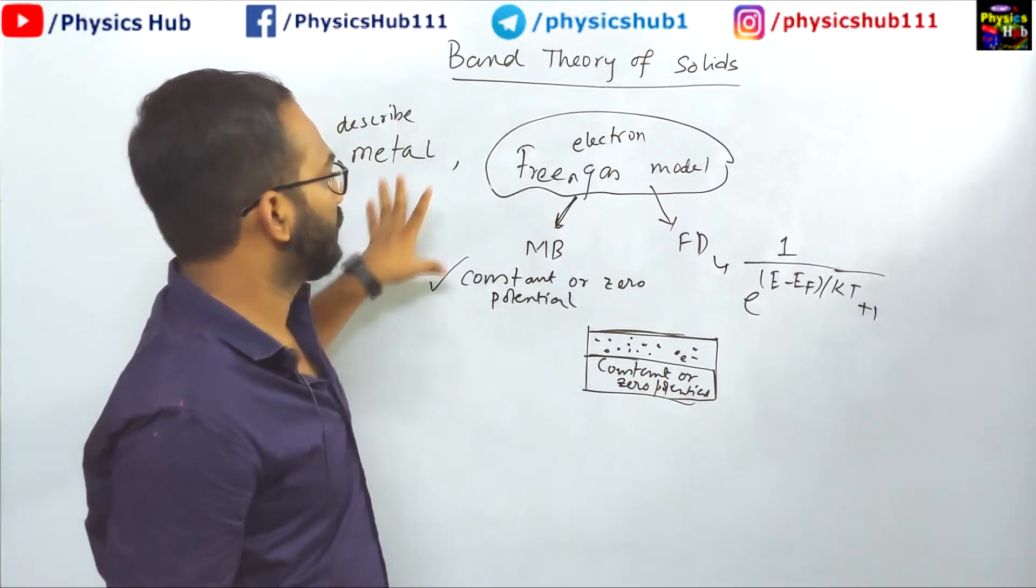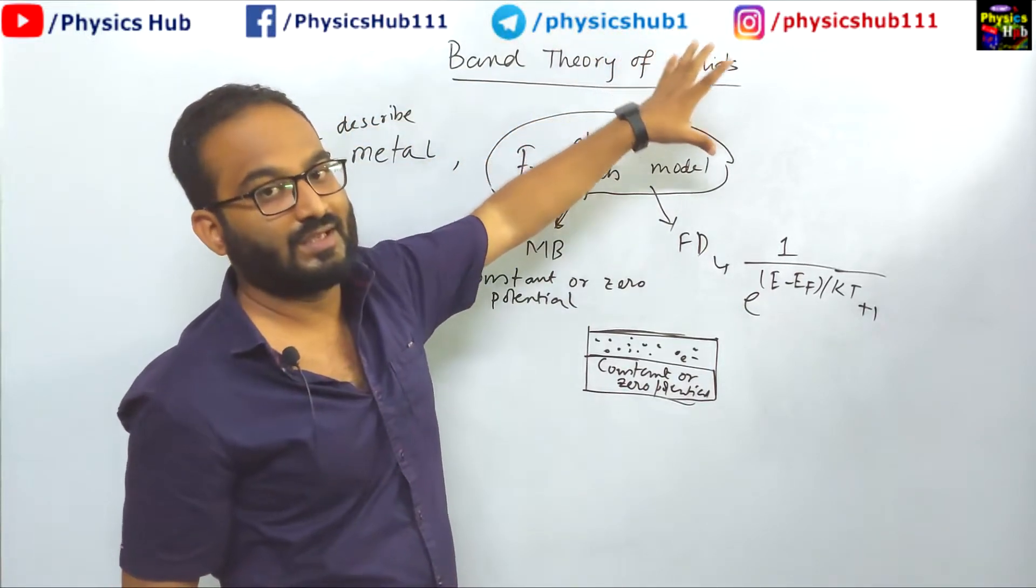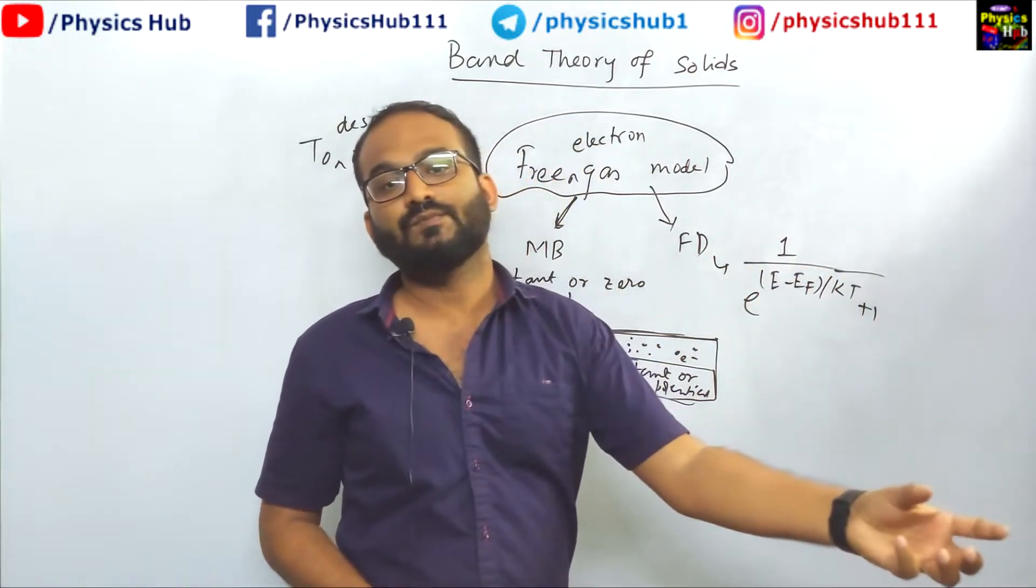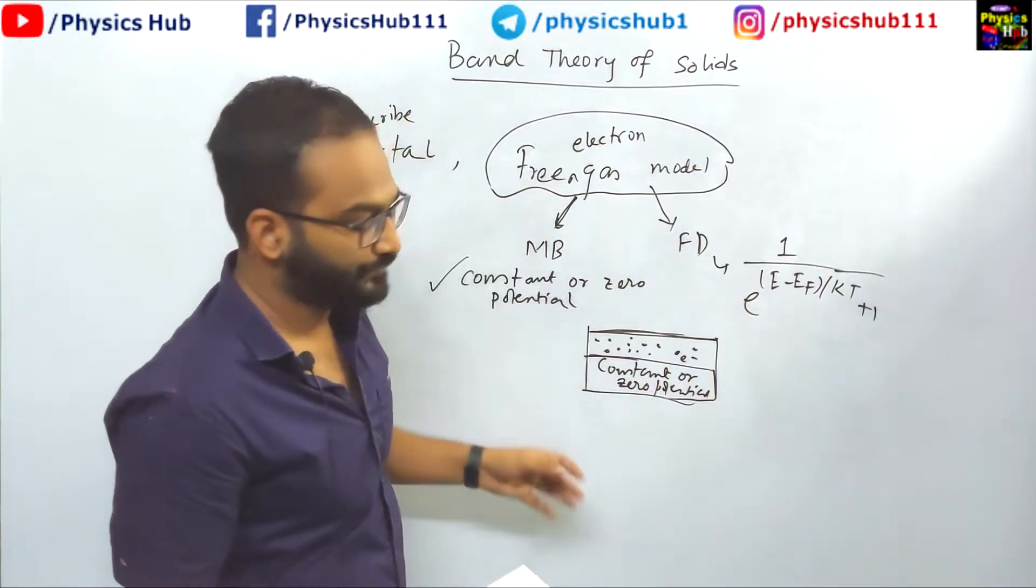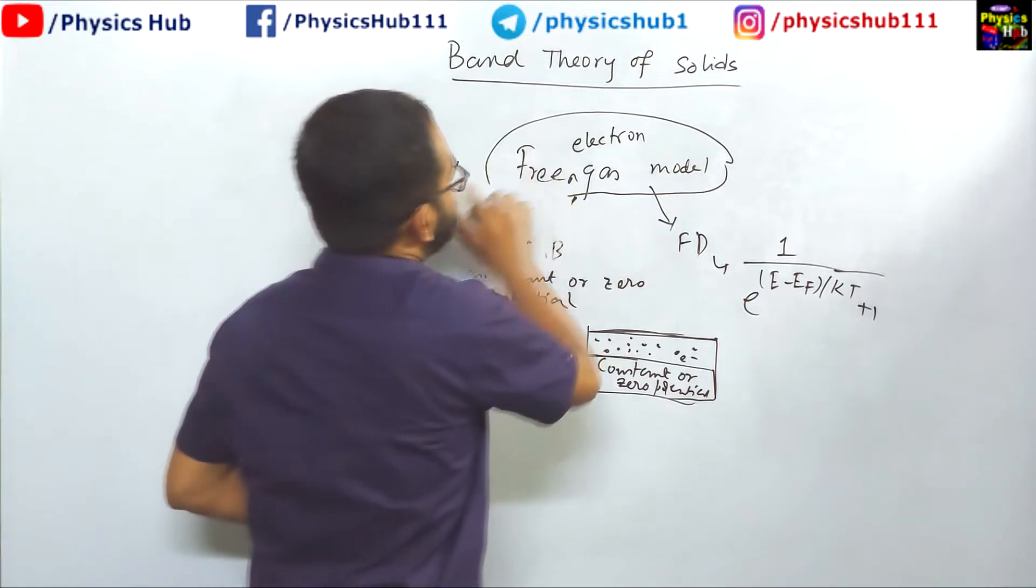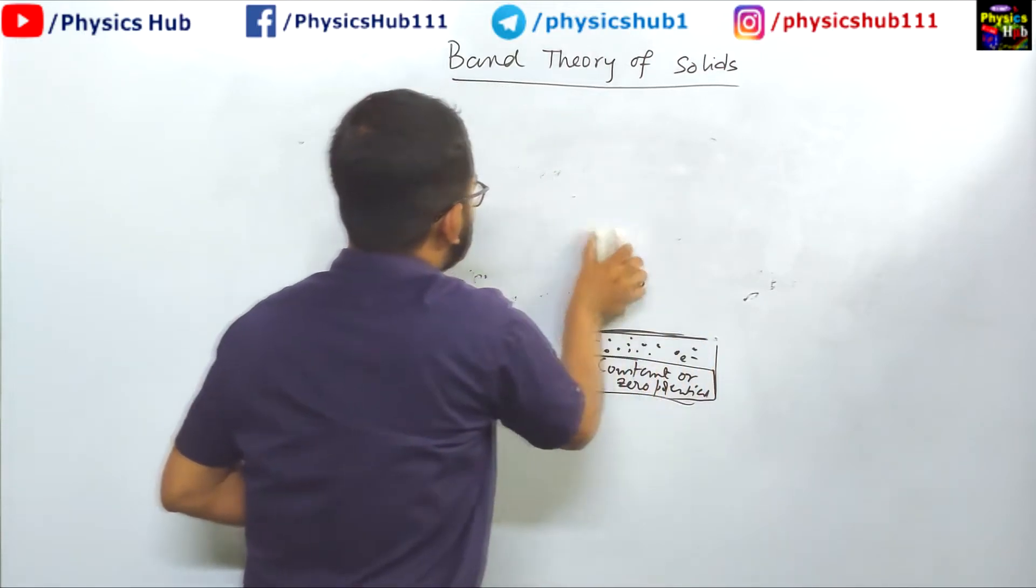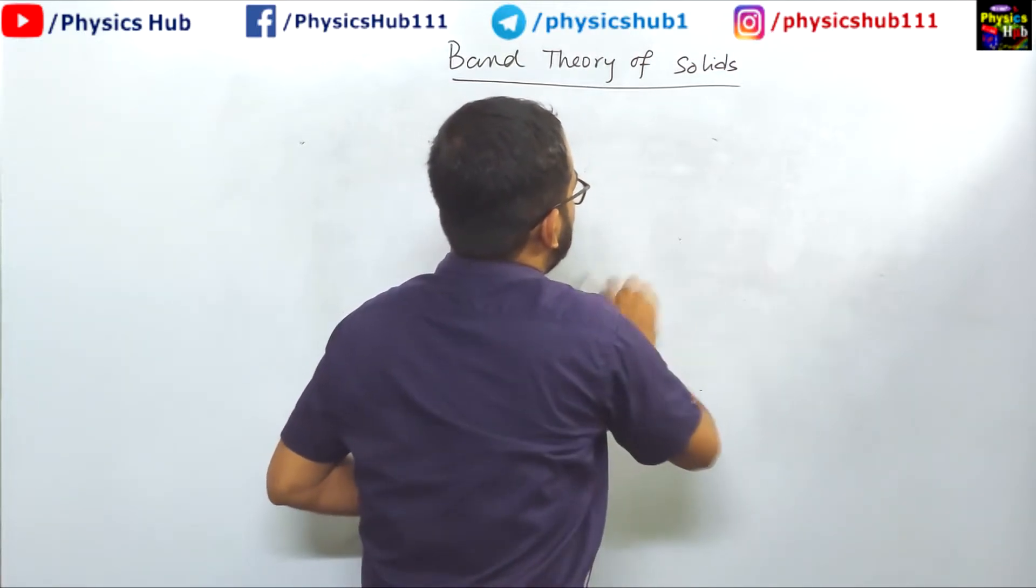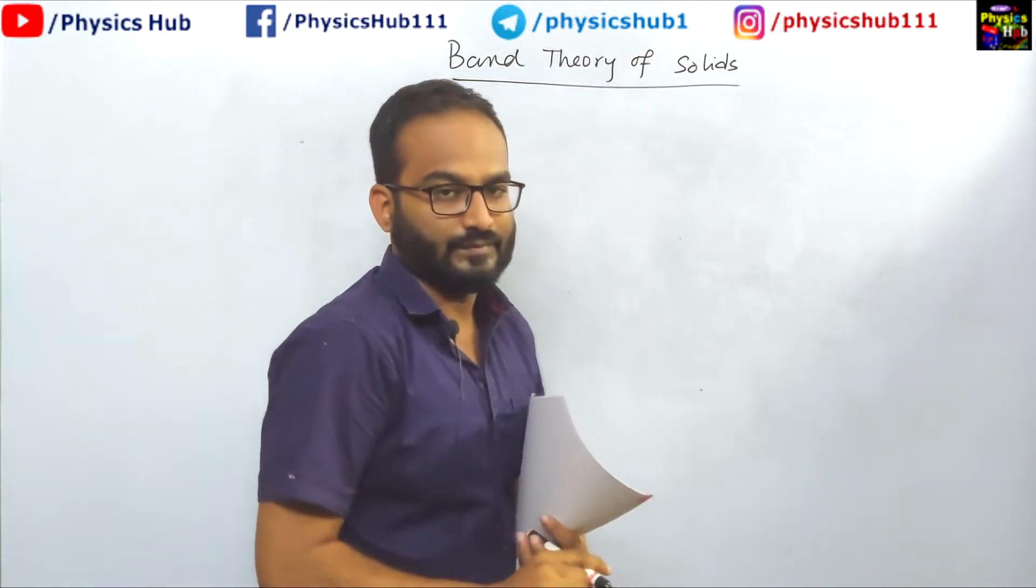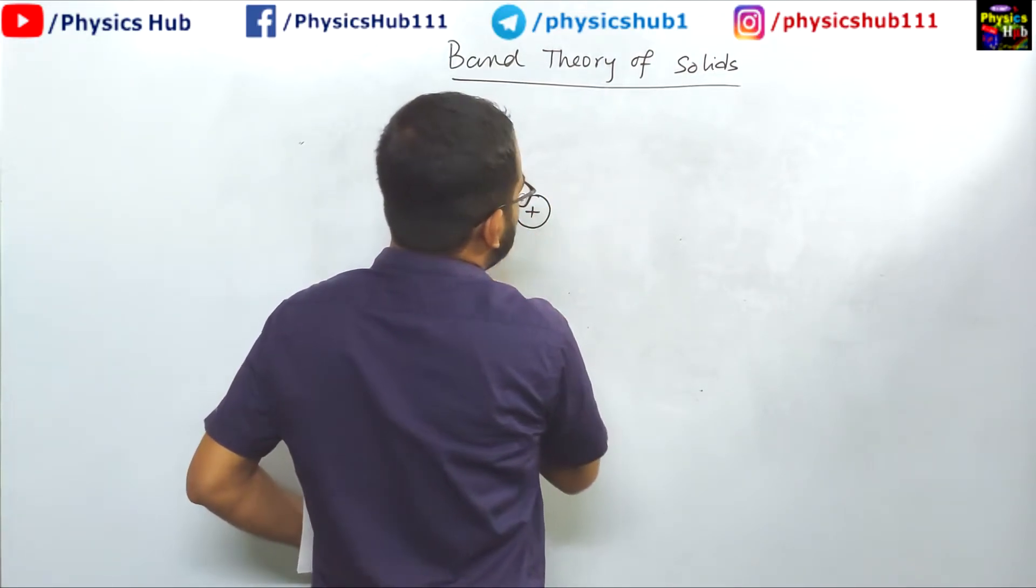To overcome this failure, band theory of solids was introduced. In band theory, instead of constant or zero potential, some other potential was taken. The exact form of the potential is quite complicated. To simplify it, some kind of periodic potential was considered, and the ion cores were also given importance.